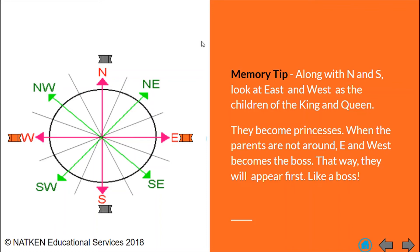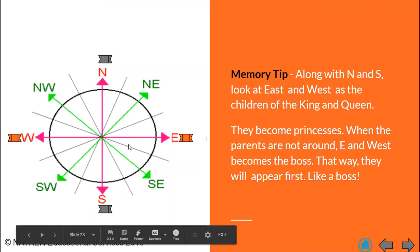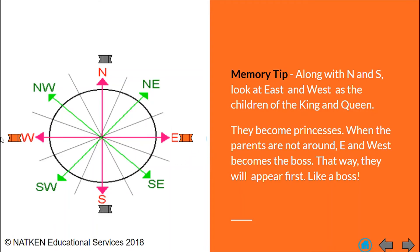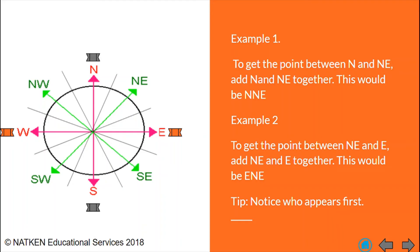Here's another memory tip. Along with north and south, remember north is our king, south is our queen, we now have little children. East would have been our princess and west would have been our prince. So we have four persons now or four cardinal points now that we consider to be royalty. Now these cardinal points will always appear first. First example. To get the point between north and north east we're just going to add both of them together or put the letters together so that we can ensure that we get the point that is in between. This would give us north north east because we always put our king first.